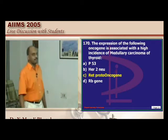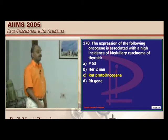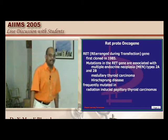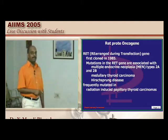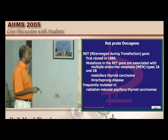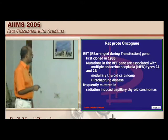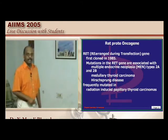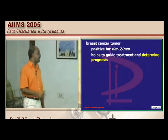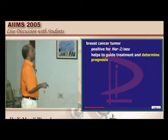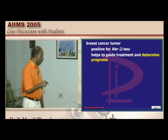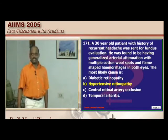The RET proto-oncogene is associated with medullary carcinoma of the thyroid. RET stands for 'Rearranged during Transfection' gene, first cloned in 1985. RET mutations are identified in MEN type 2a and 2b, medullary thyroid carcinoma, Hirschsprung's disease, and papillary thyroid carcinomas. HER2-neu oncogene is found in breast cancer — it determines prognosis and guides treatment.